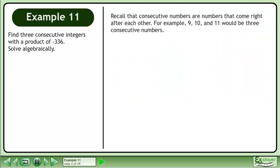Recall that consecutive numbers are numbers that come right after each other. For example, 9, 10, and 11 would be three consecutive numbers.